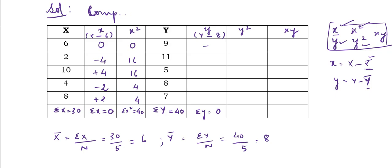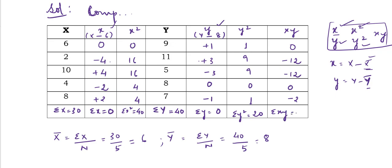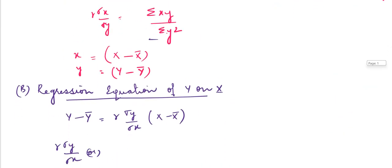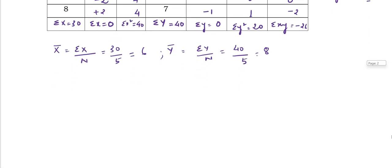For small y = y minus 8: 9−8=+1, 11−8=+3, 5−8=−3, 8−8=0, 7−8=−1. Total is 0. For y²: 1, 9, 9, 0, 1 — so submission of y² equals 20. For xy (multiply small x and small y): 0×1=0, −4×3=−12, 4×(−3)=−12, −2×0=0, 2×(−1)=−2. So submission of xy equals −26.